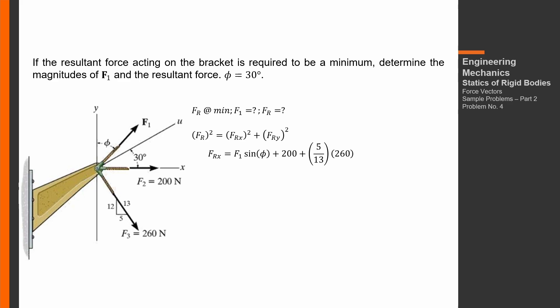Plus (5/13) times 260 for F3's x-component, because 5 is parallel to the x-axis in the triangle with hypotenuse 13. Substituting phi equals 30 and simplifying: (5/13)(260) = (5)(20) = 100. So FRx equals F1 sine 30 plus 200 plus 100, which gives F1 sine 30 plus 300.